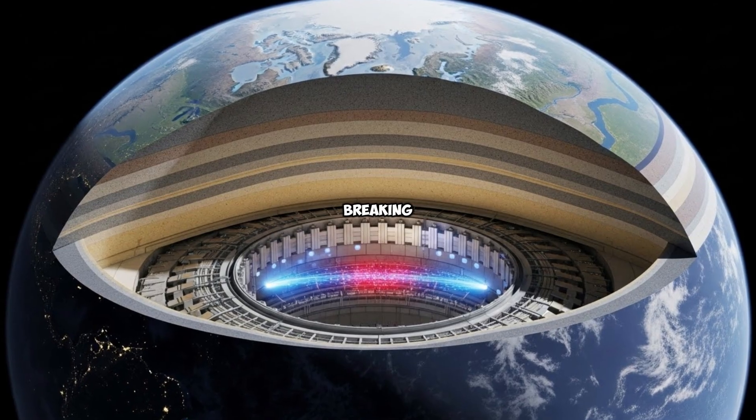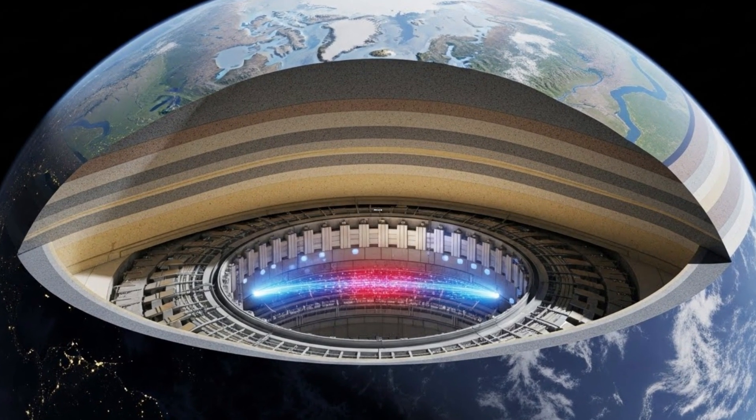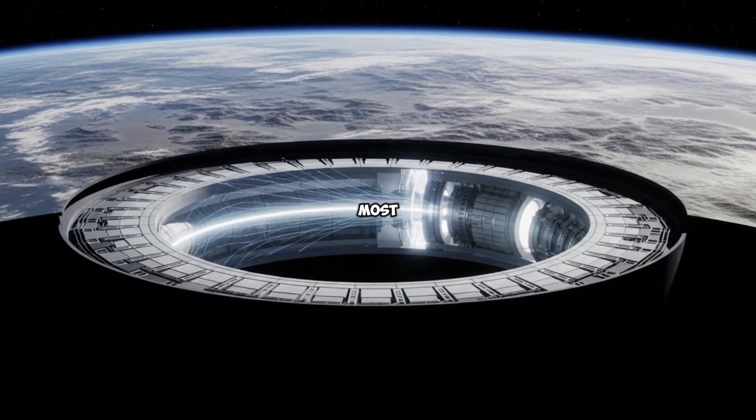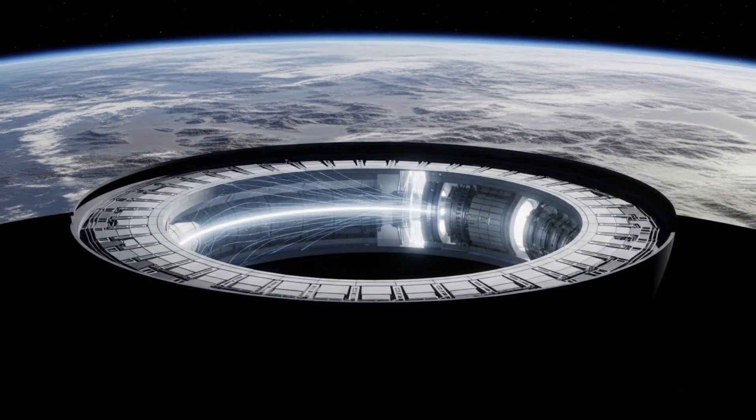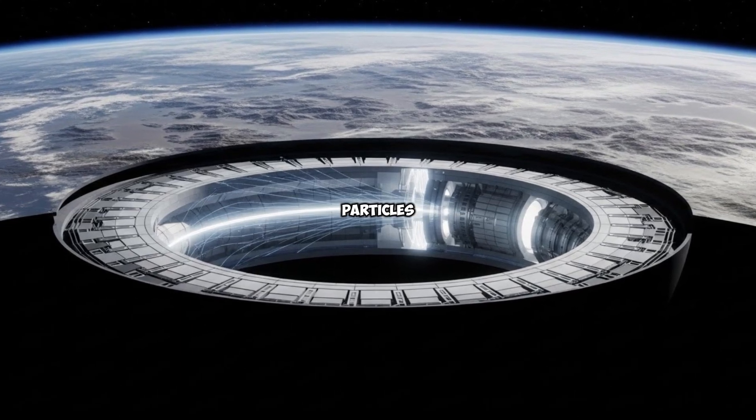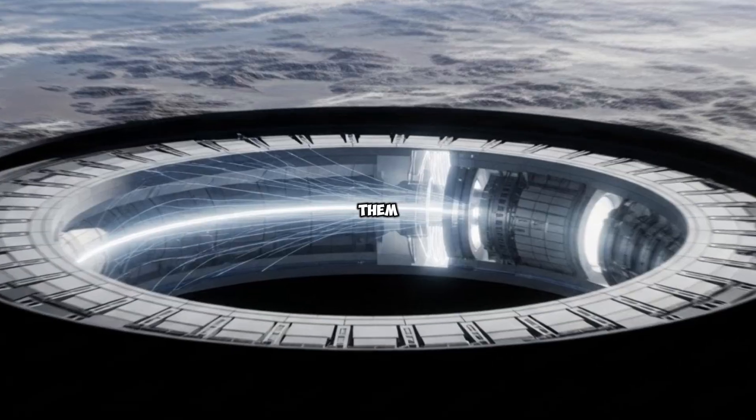What happens when the universe starts breaking its own rules? What happens when precision becomes a problem? Today, we're going deep into one of the most important mysteries in modern science. A mystery hiding in plain sight, written in the language of particles so small we can barely imagine them. A mystery that could rewrite everything. This is the story of CERN's anomaly, the one that won't go away.